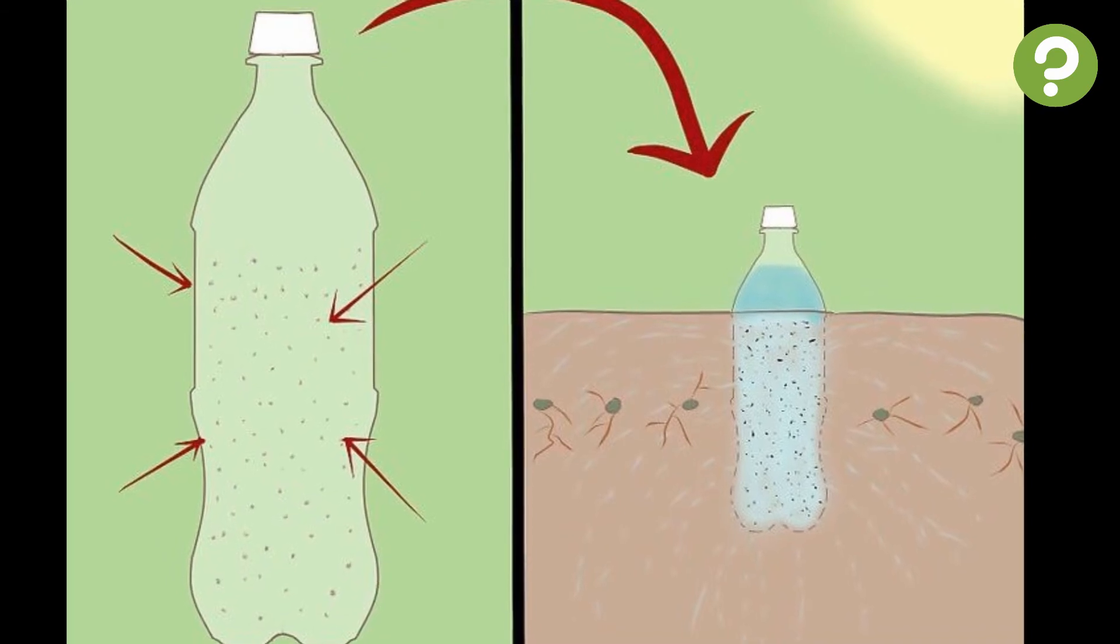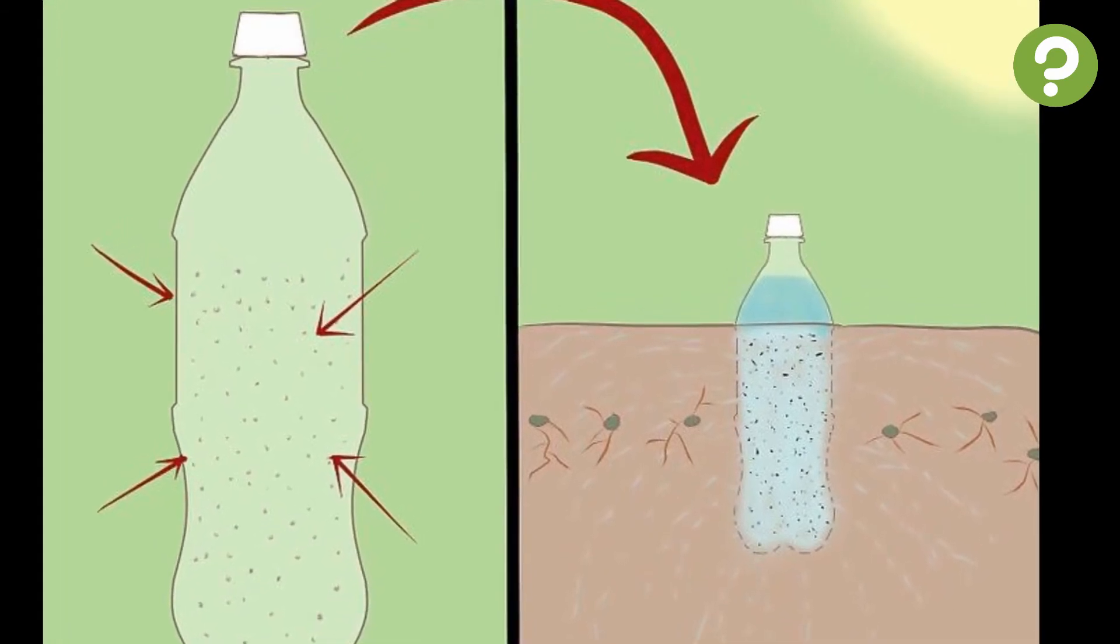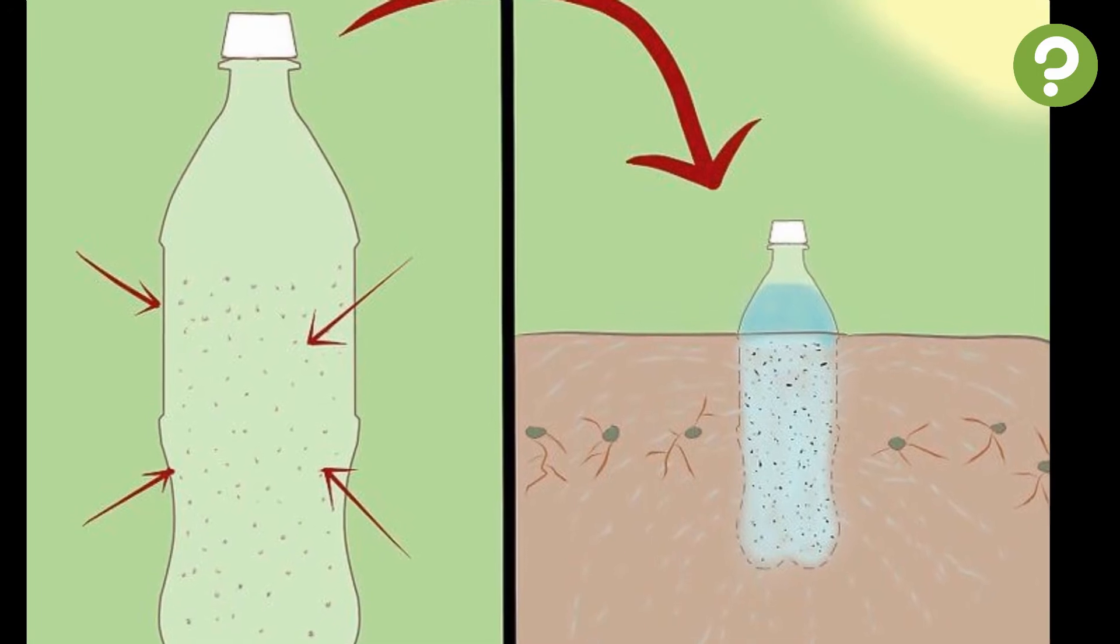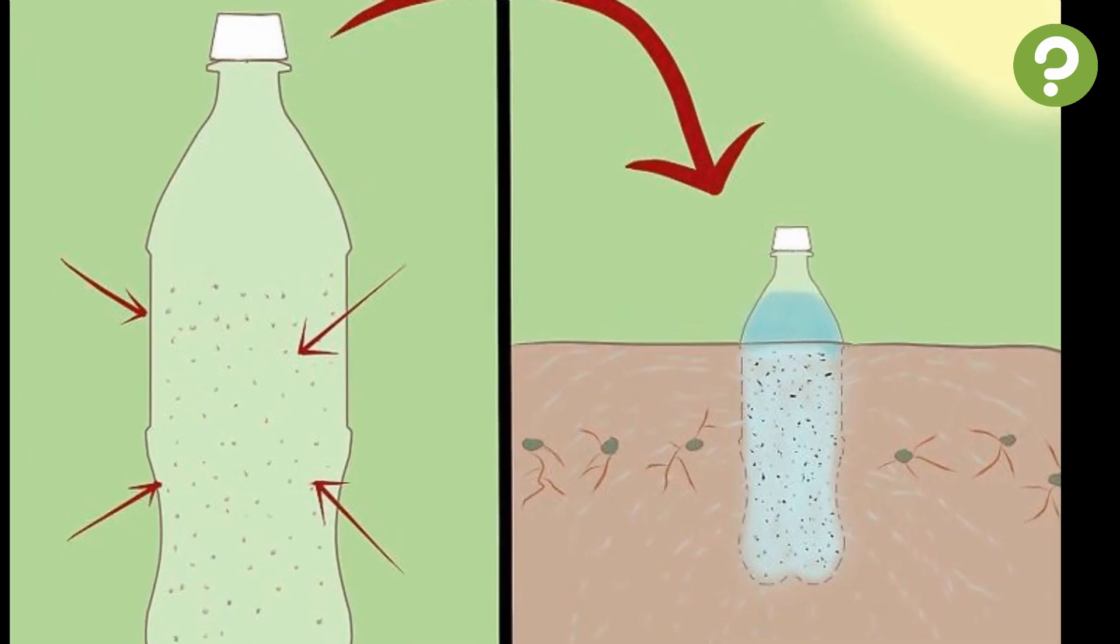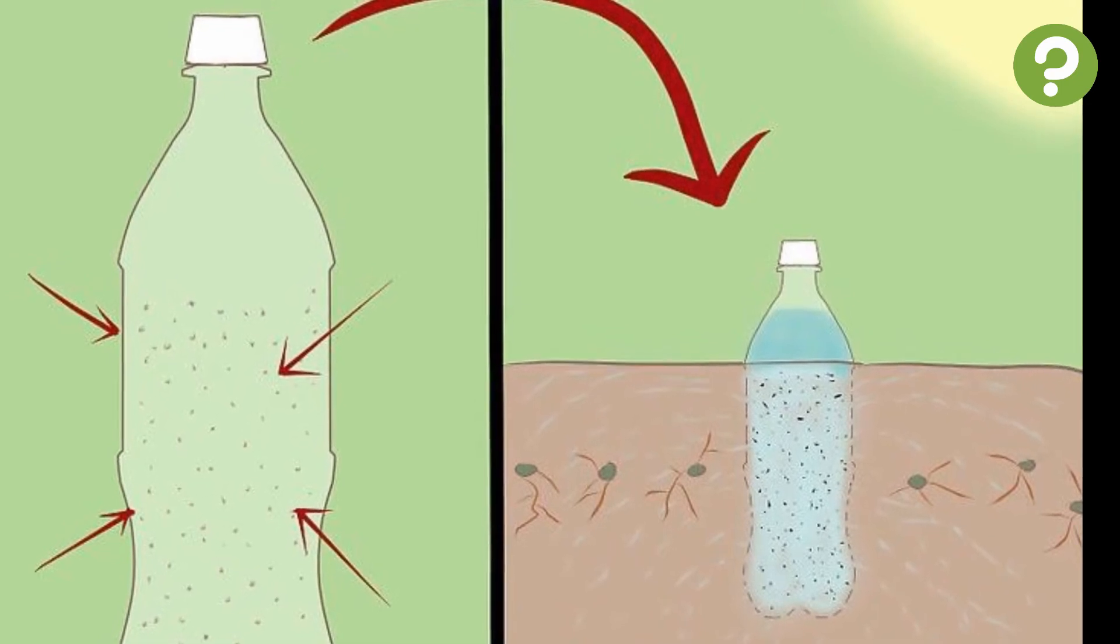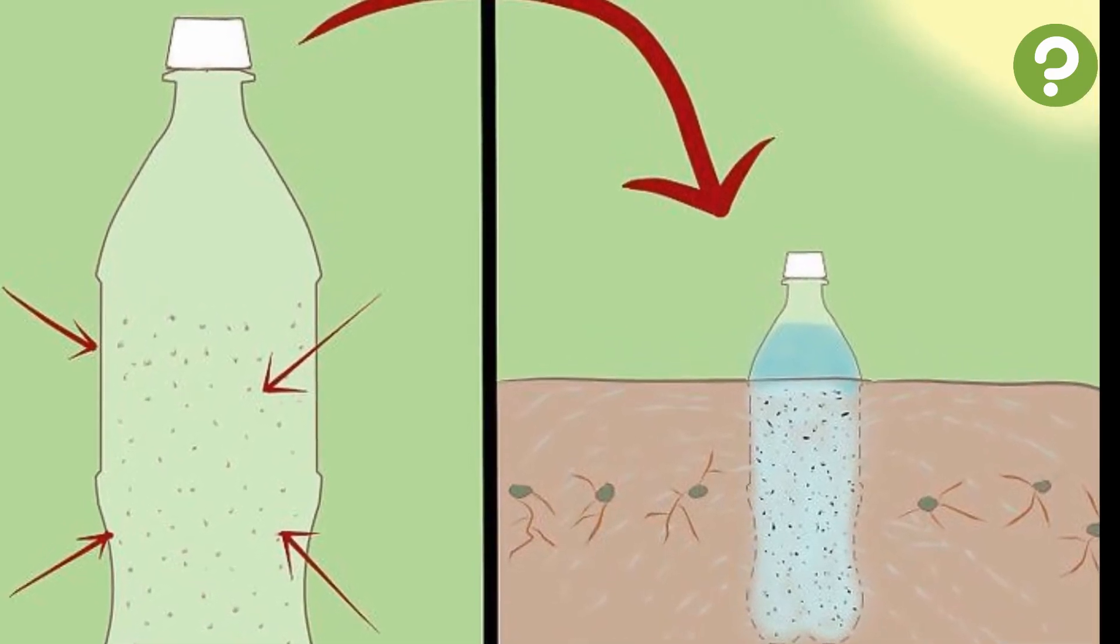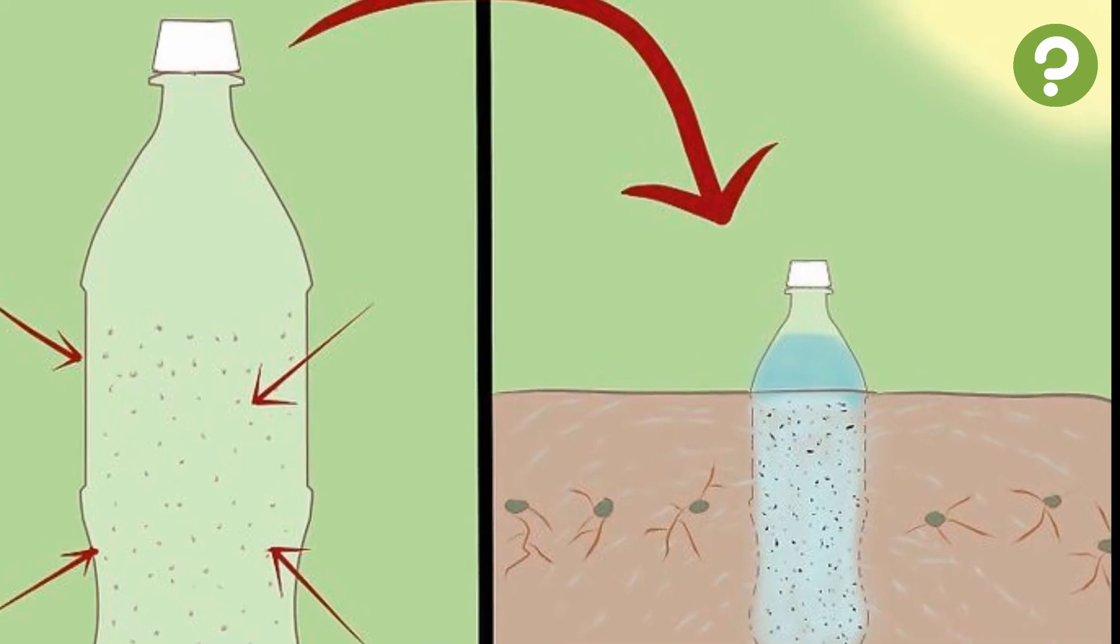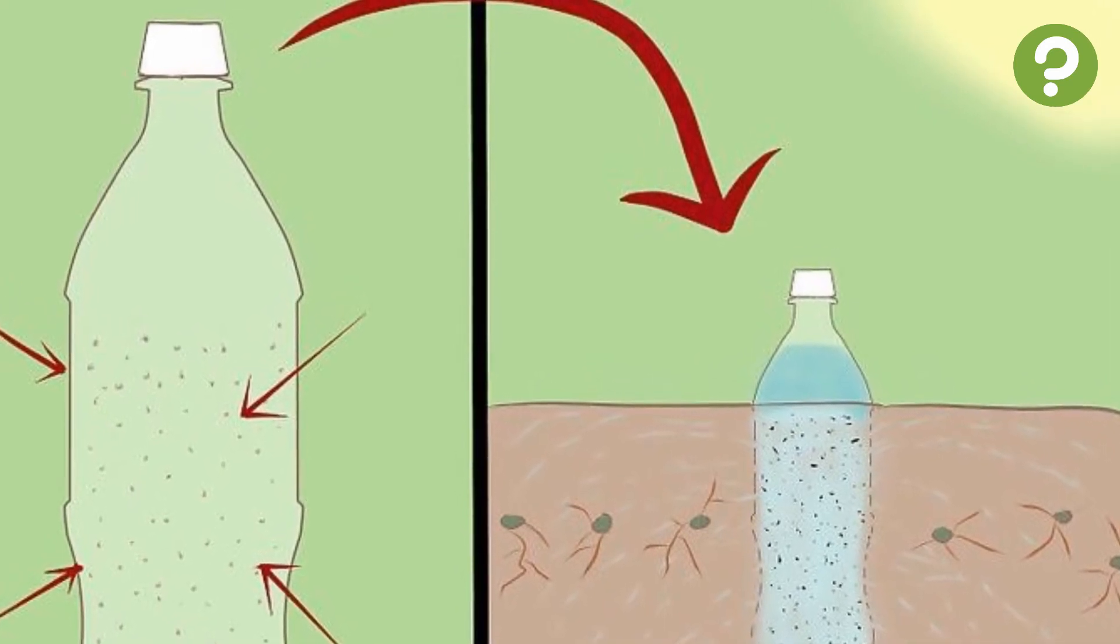3 – Use it as an irrigation tube. You can use a small plastic bottle as an irrigation tube for your plants. Take a 16- or 20-ounce plastic bottle and poke small holes throughout its sides so water can seep out. Then plant the bottle all the way into the ground close to the plant, leaving just the top of the bottle visible.